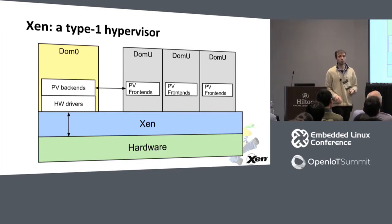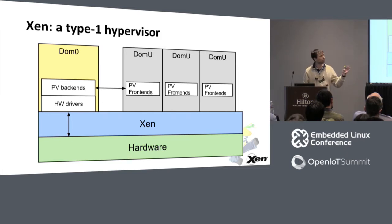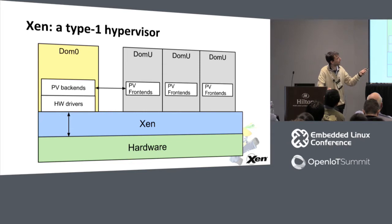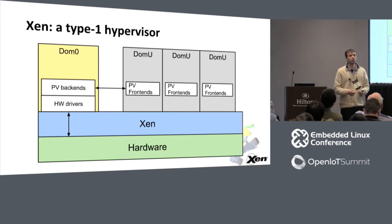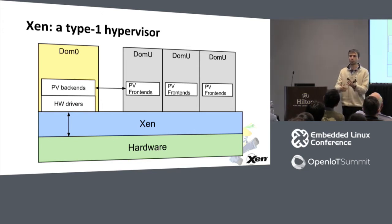Xen is a type 1 hypervisor — it runs directly on the hardware. Everything else runs on top of Xen as a virtual machine, including DOM0, which is the first virtual machine that boots and has all the drivers for your platform, because by default Xen assigns all devices to DOM0. DOM0 also has the PV backend — a way to share a device across multiple guests. Unprivileged guests have PV frontends, like virtual frontend drivers creating a virtual network card, connecting to backends in DOM0 which can be in kernel space or user space.